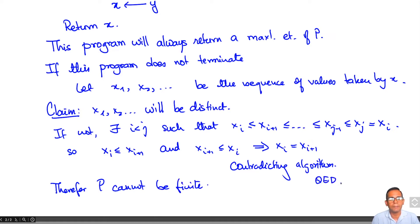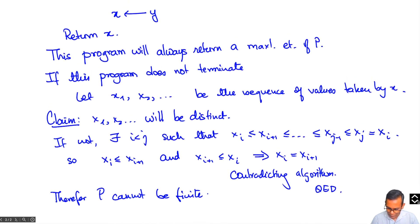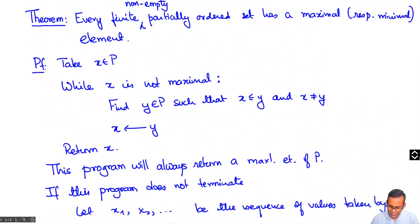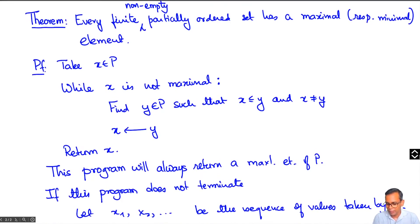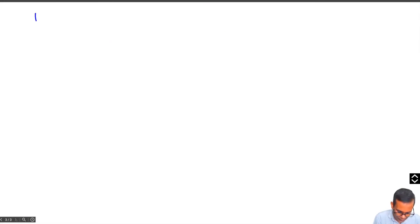Of course, you can find infinite posets which do not have maximal elements — for example, the partially ordered set of positive integers with the usual total order, or positive integers with the partial order of divisibility. The same reasoning with the order relation reversed shows that every non-empty finite partially ordered set has a minimal element as well. Now let's talk about least and greatest elements. The main result here is that every poset has at most one greatest or least element.